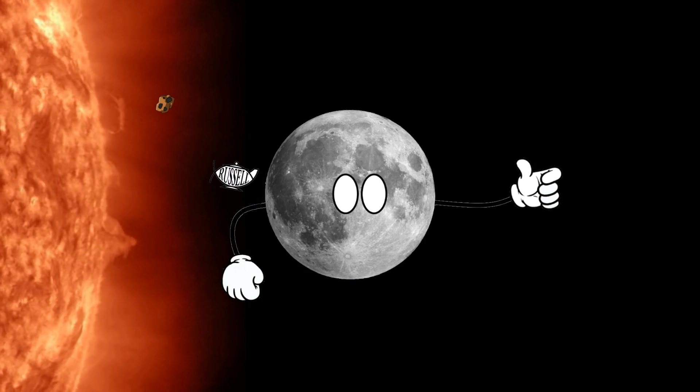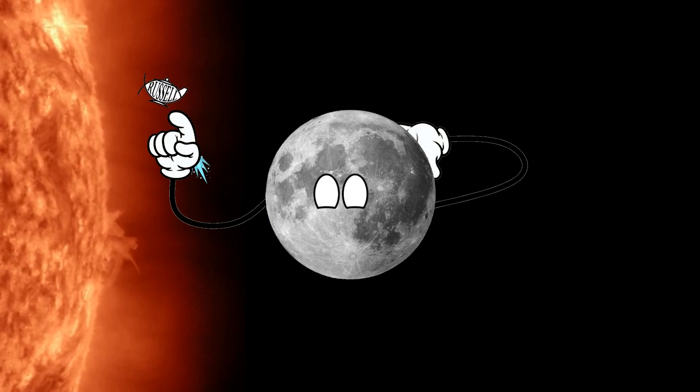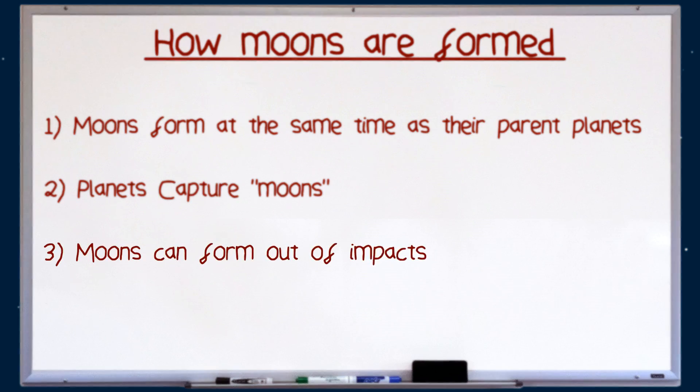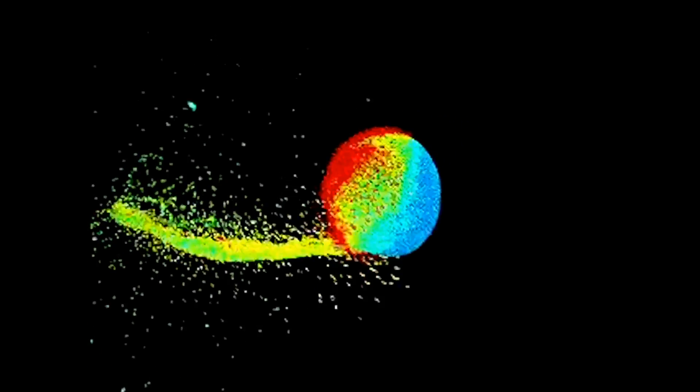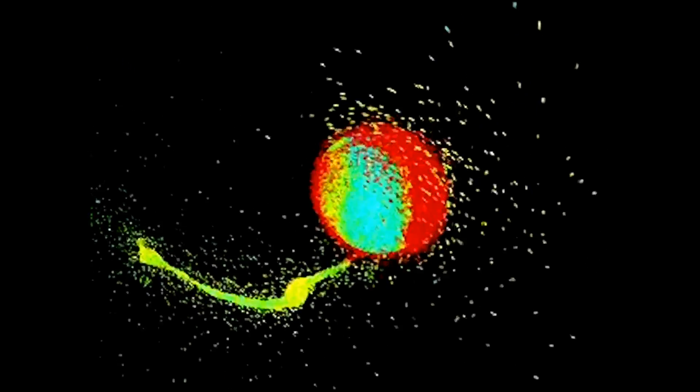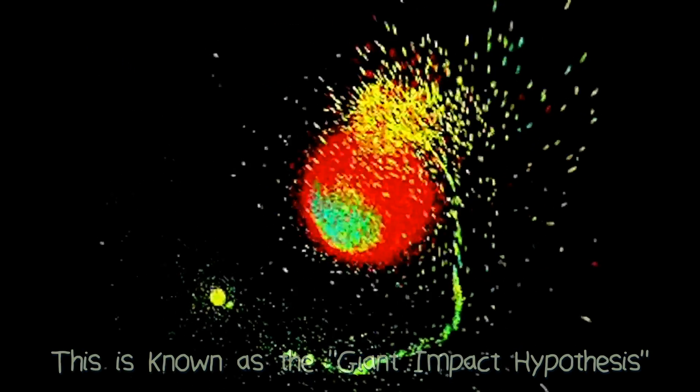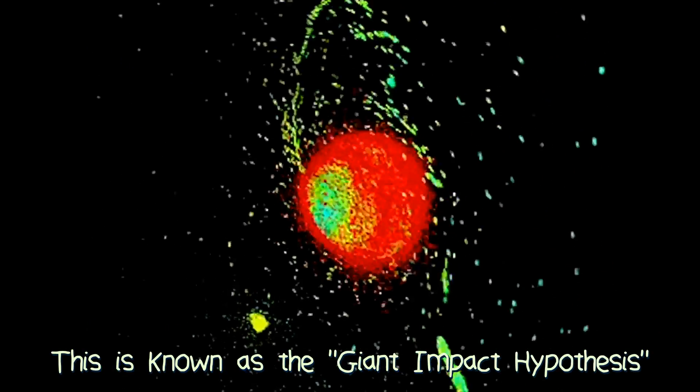But, if you're a fan of this channel, you'll know there is one more way to make a moon. Number three, moons can form out of impacts. There are many examples in our solar system in which a moon has formed from the debris thrown up into space after a massive collision on the parent planet. The best example of this? Our own moon.